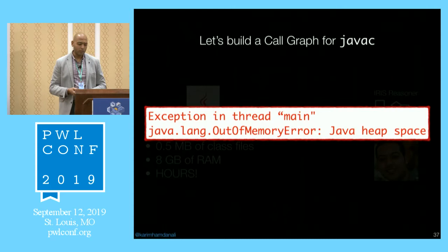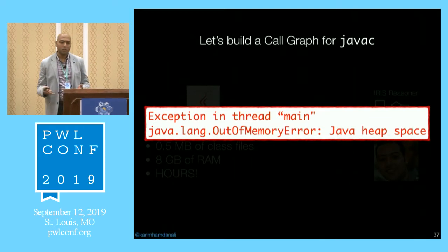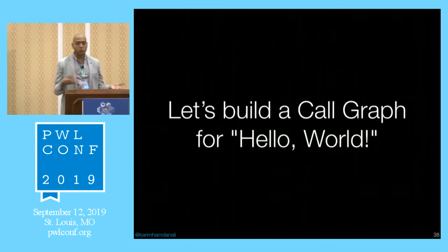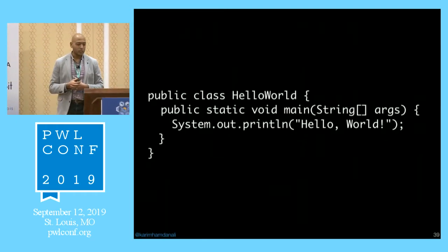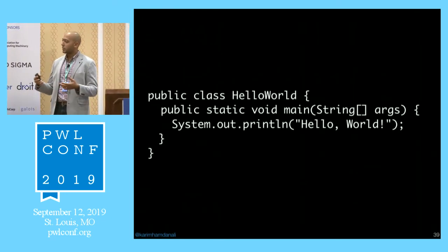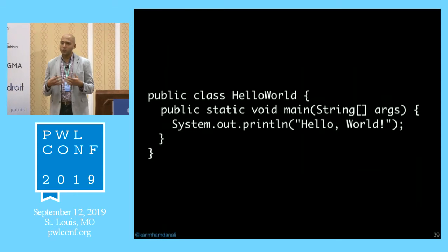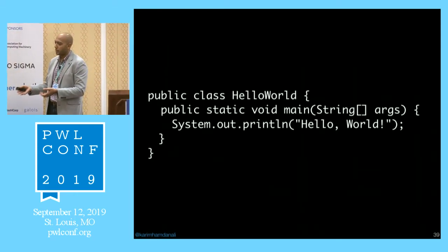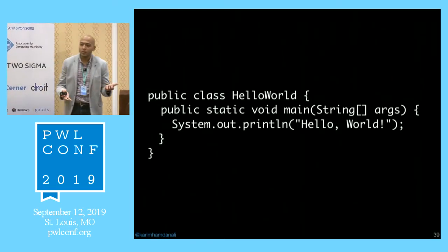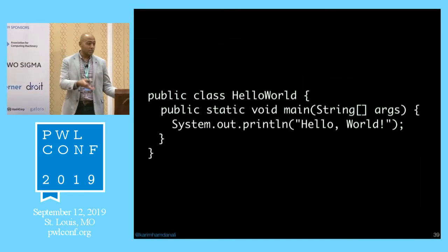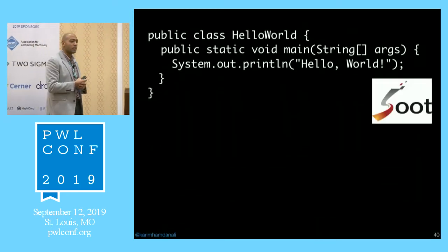I didn't know why it was so difficult. Maybe I took it too far — the Java compiler is a large codebase. So I went to the other extreme: the smallest Java program, a Hello World. I ran it on the same Iris reasoner with the same Datalog-based analysis. It still took a considerable amount of time. I thought maybe something was wrong with my analysis, or maybe the engine wasn't optimized, so I tried a different framework.